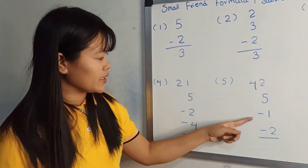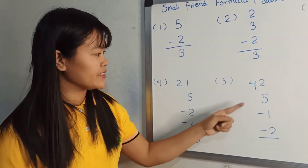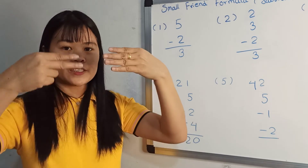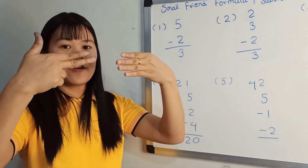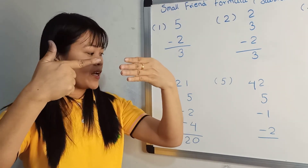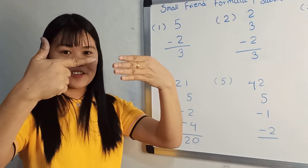Forty-two plus five, minor one, minor two. Forty-two plus five, minor one, minor two. No, man.